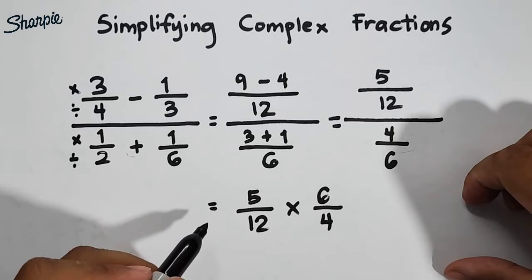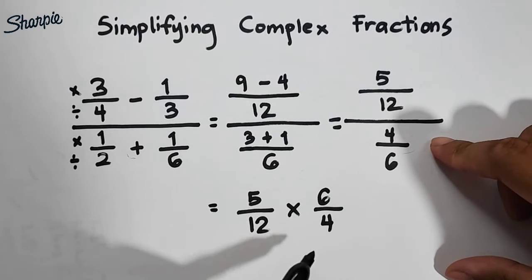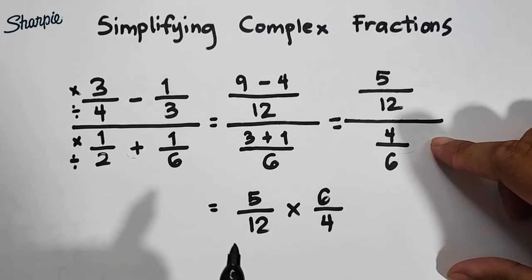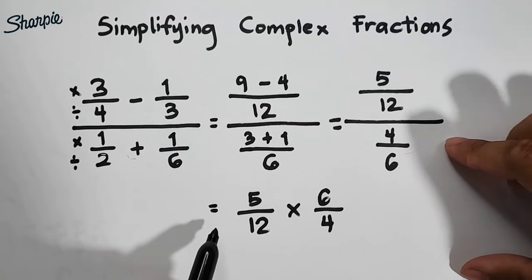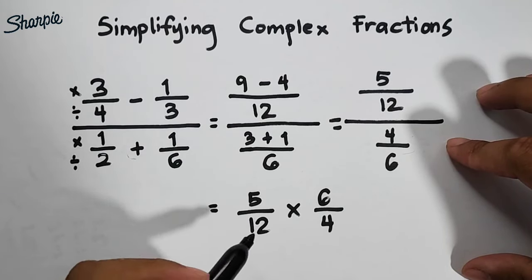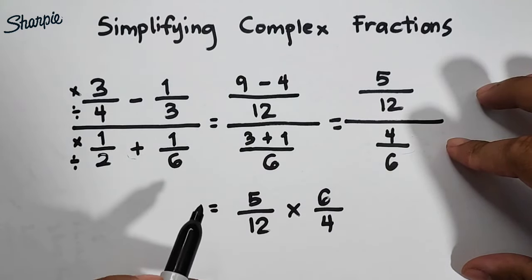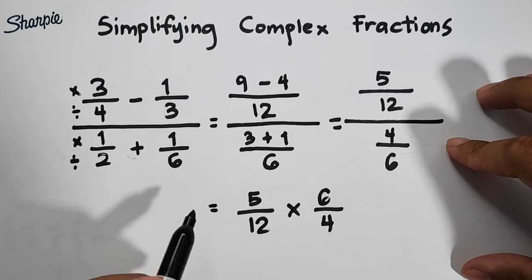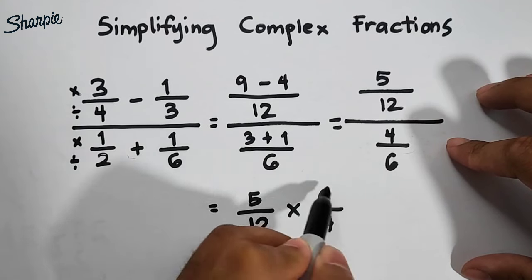So as you can see, we can directly multiply these numbers. Now, instead of doing that, we can use cancellation. As you can see, we have here 12 and 6, wherein their greatest common factor is 6.